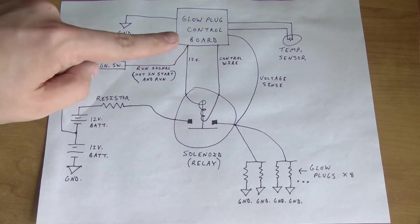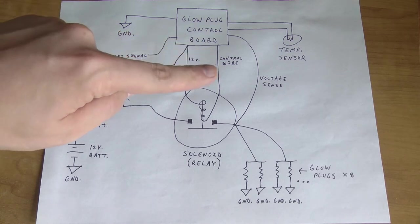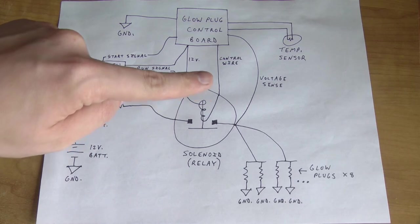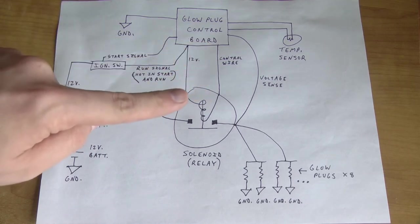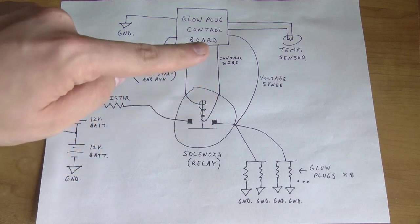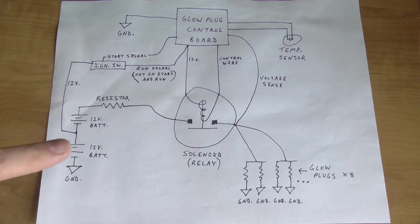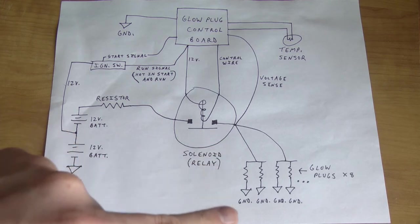And the control board is grounded. The control board will apply a ground to the other side of this coil when it wants the solenoid to be active. I have 12 volts here. When it's grounded through the board, the solenoid activates and provides power to all eight glow plugs.